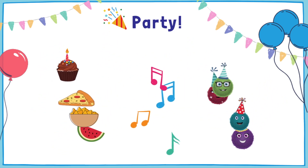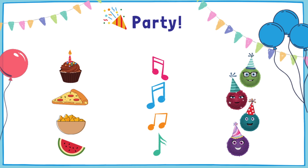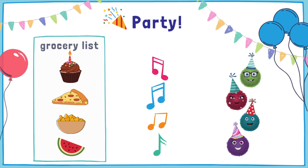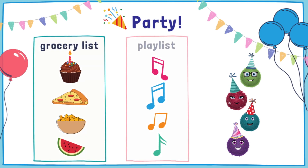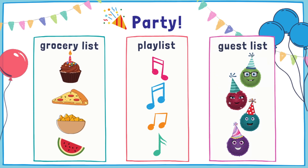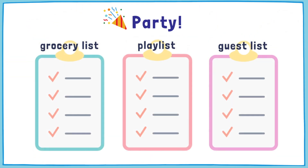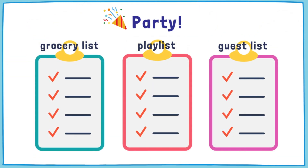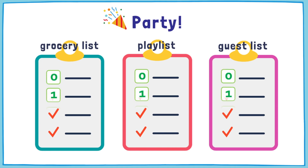You might group all these items into lists — a grocery list, a playlist, a guest list. All of these lists help you keep related information together and organized. We use lists every day, not just when we're planning a party. They can help us decide what's most important and think about the big picture.